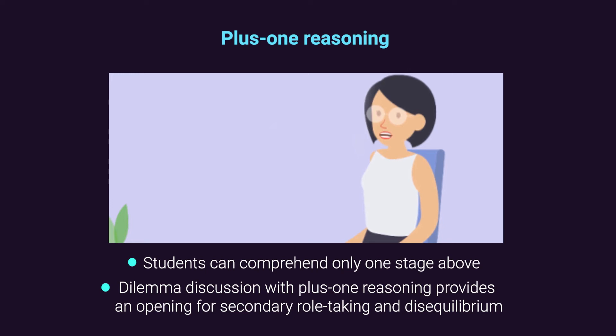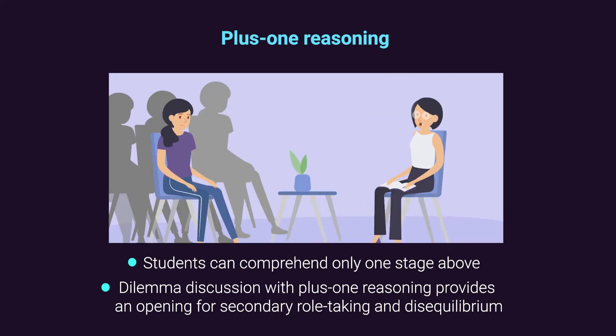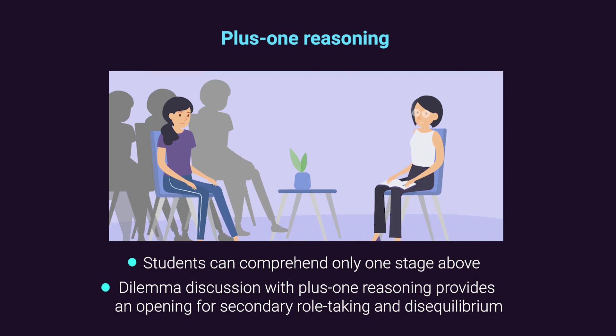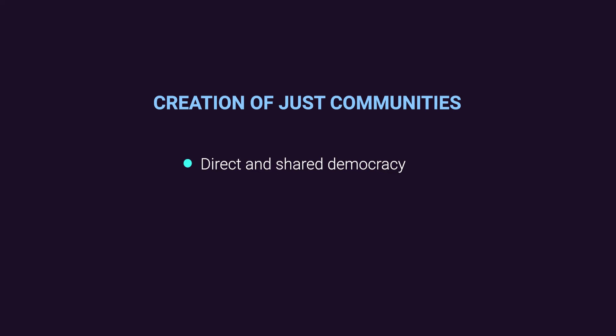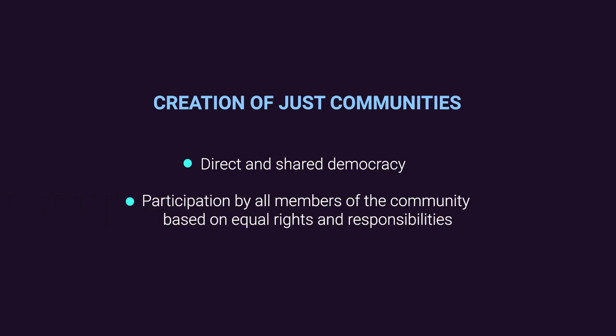Dilemma discussion, which relates to plus one reasoning, provides an opening for secondary role-taking and disequilibrium. The third strategy is creation of just communities, mainly to foster moral development and moral action. The concept of the just community involves the creation of a total environment, with two significant ideas: direct and shared democracy, and participation by all members of the community based on equal rights and responsibilities.